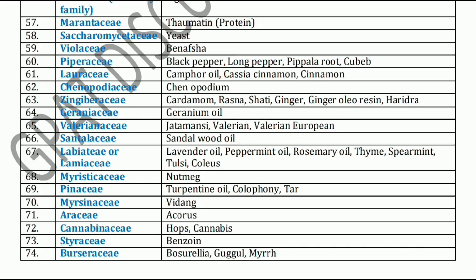Next, Valerianaceae family. Valerianaceae family includes Jatamansi, Valerian, and European Valerian. These come under the Valerianaceae family. Next, Santalaceae family. Santalaceae family mainly includes Sandalwood oil.